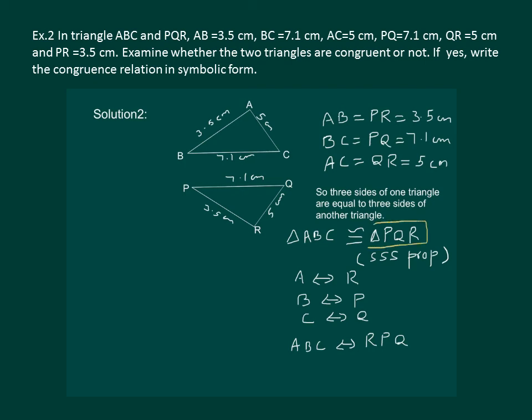And now it is time to understand that we should write congruency in the order of correspondence. So instead of writing ABC is congruent to PQR, we should write ABC is congruent to triangle RPQ by SSS property. By doing this we can know that A lies on R, B lies on P, and C lies on Q.